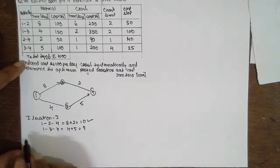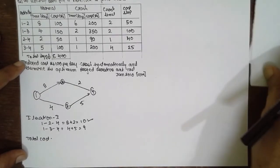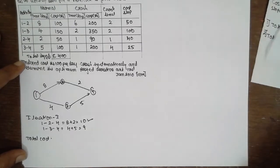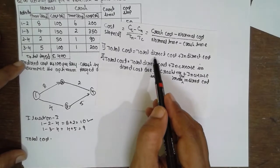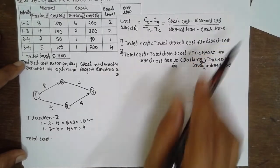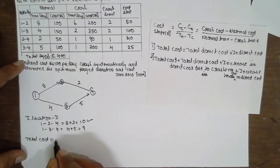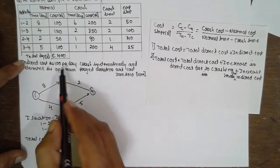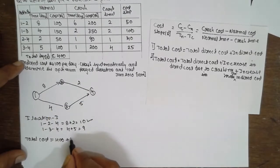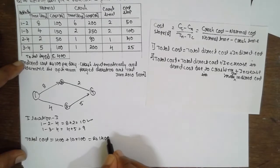Now we are going to find out the total cost. The formula for total cost is: total direct cost plus indirect cost. Total direct cost is 400, plus indirect cost: 10 into 100. The answer is rupees 1400.